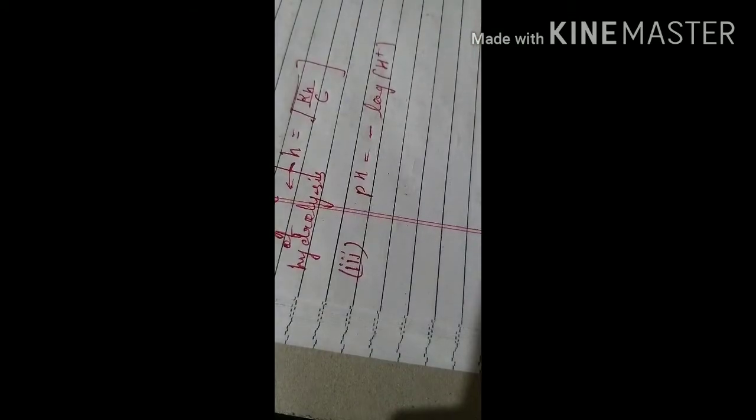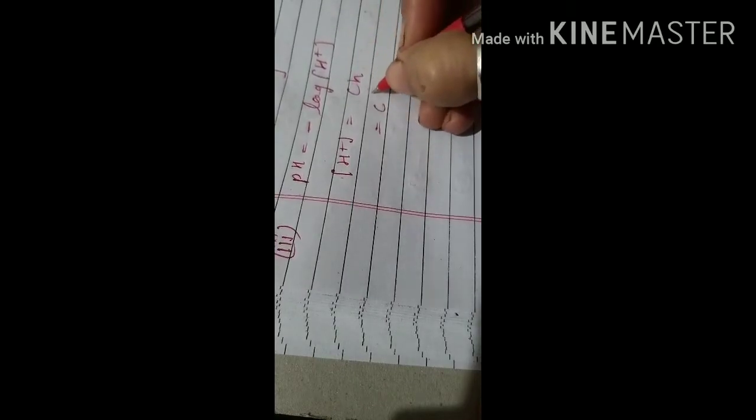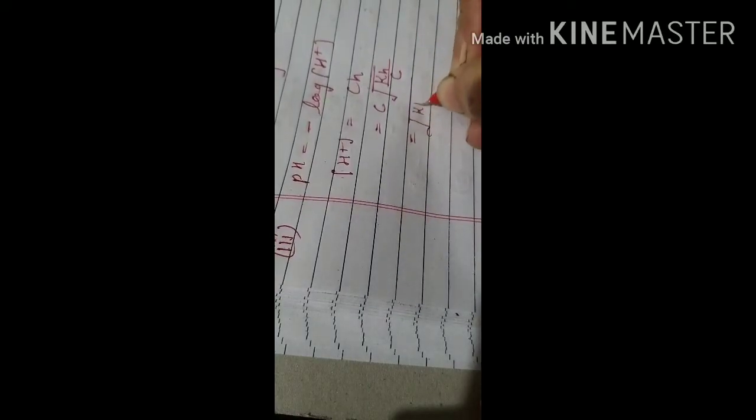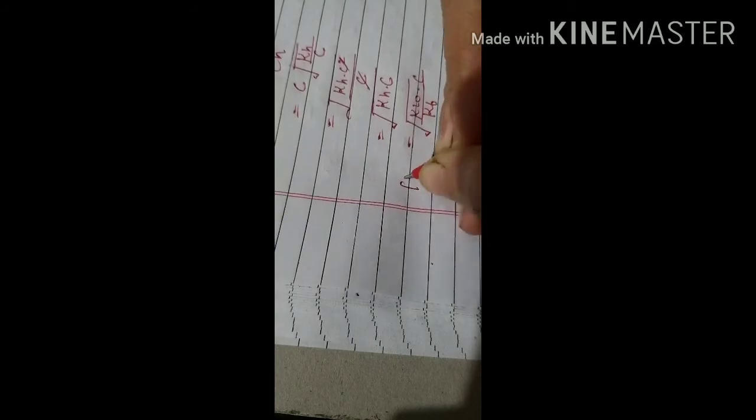From the previous equation, [H⁺] = Ch. Substituting h = √(Kh / C), we get [H⁺] = C × √(Kh / C) = √(Kh × C). Since Kh = Kw / Kb, we can write [H⁺] = √(Kw × C / Kb).